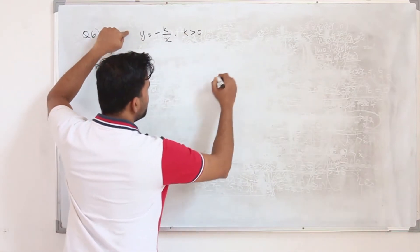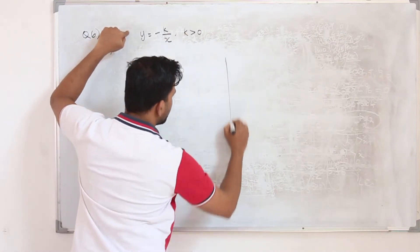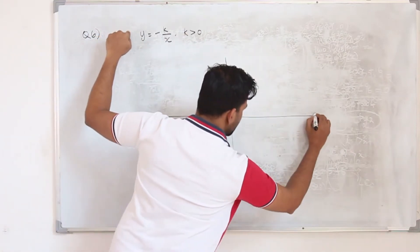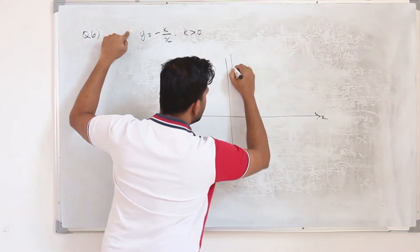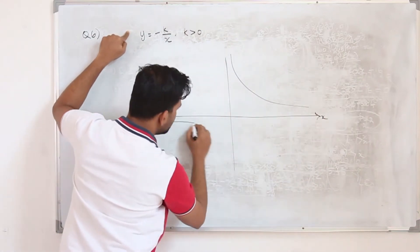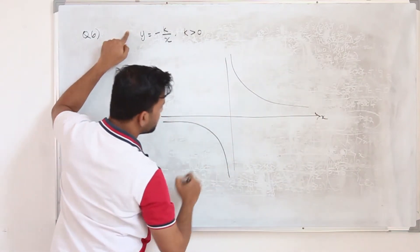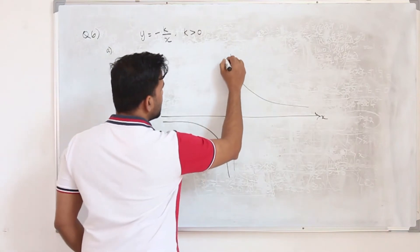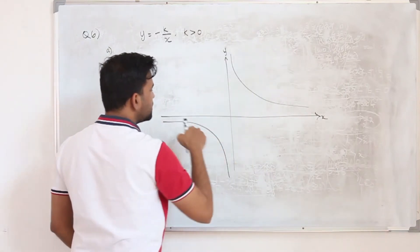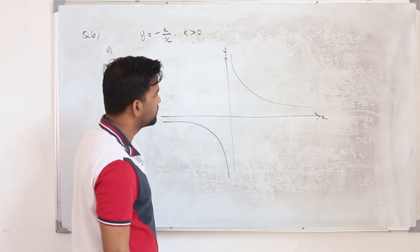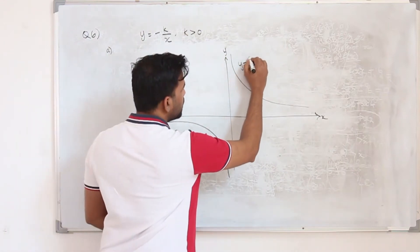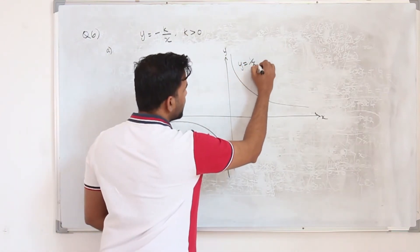We start from the basic reciprocal graph 1 upon x. The graph consists of two separate curves in the first and third quadrants. That's our y equals 1 upon x.